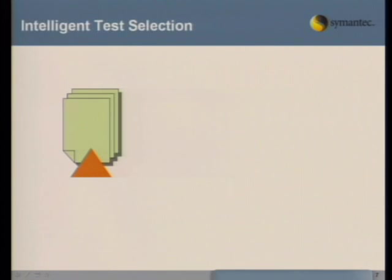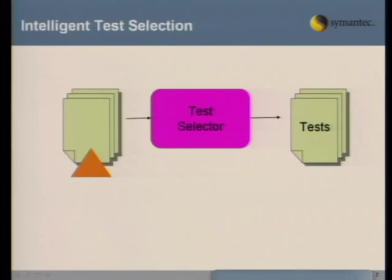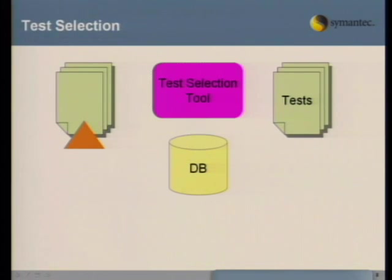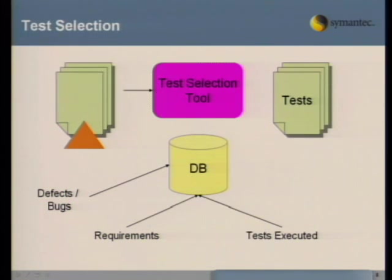Here's the basic high-level overview of what we're trying to do: given a set of source code changes, determine the set of tests that need to be run. To implement this, we've decided to do data mining on test artifacts that are all interrelated in testing — things like your defect management system, bugs associated with test cases and source code, your requirements, test case execution history, and build information. From this, hopefully a tool can adequately determine what tests need to be run.